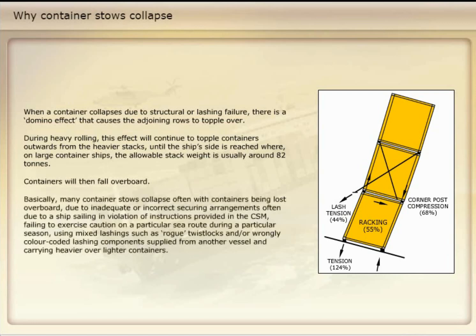Many container stows collapse, often with containers being lost overboard, due to inadequate or incorrect securing arrangements — often due to a ship sailing in violation of instructions provided in the cargo securing manual (CSM), failing to exercise caution on a particular sea route during a particular season, using mixed lashings such as rogue twist locks and/or wrongly colour-coded lashing components supplied from another vessel, and carrying heavier containers over lighter ones.